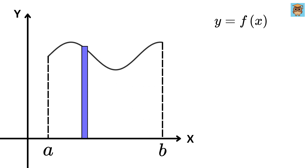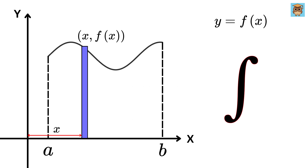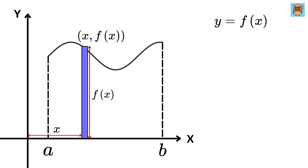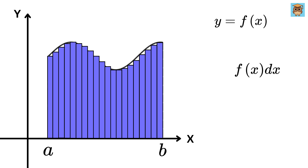Consider a single slice located at point x comma f of x. So this will be equal to x and this will be equal to y or f of x. If I denote this tiny width by dx, which shows a very small change in x, then the area of this rectangle will be width times height, or f of x times dx. If we add up the areas of all such small rectangles, we get the summation of f of x times dx, where x goes from a to b. This gives us the area under the curve f of x between a and b.